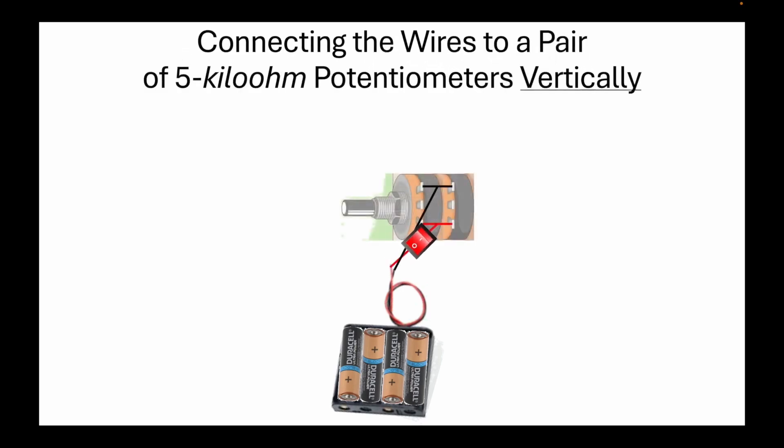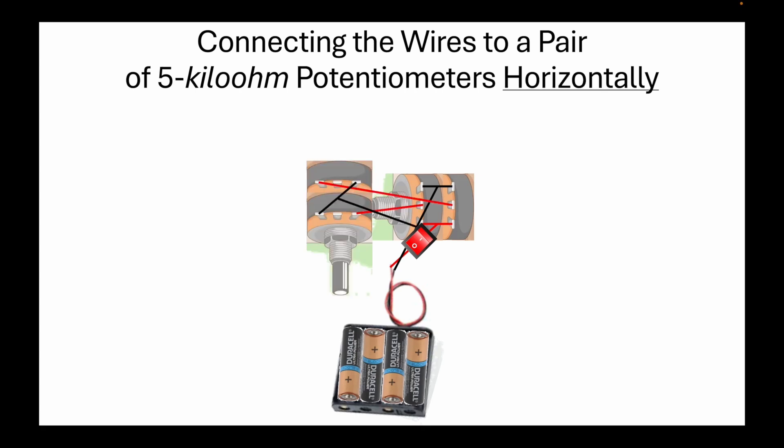Once we have connected the power supply to a switch, we will connect the wires to a pair of 5 kilo-ohm potentiometers vertically. Then we will connect it to another 5 kilo-ohm potentiometer, this time a horizontal one.